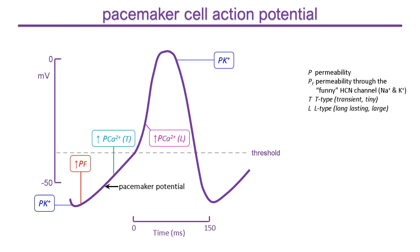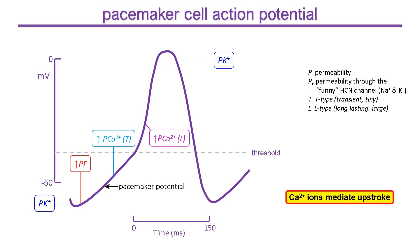A key point to note is that because calcium channels mediate the upstroke, it is much slower than the upstroke of muscle cells. This is particularly important at the atrioventricular node because it slows conduction, allowing separation of the atrial and ventricular beats.